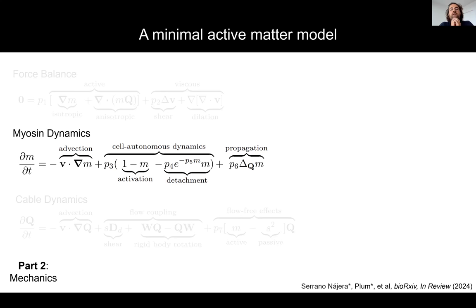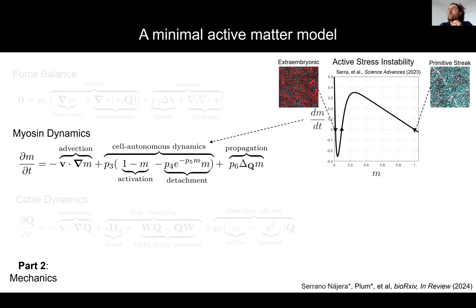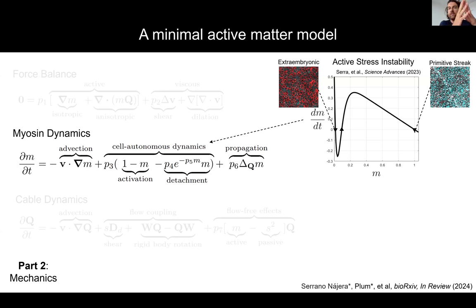An interesting property of this myosin equation is that it has instabilities. This PDE has a stable fixed point of high myosin — corresponding to the embryo proper or primitive streak — and another stable fixed point of very low myosin — corresponding to the extraembryonic region. There is also an intermediate unstable fixed point, which is where we believe the embryo operates throughout gastrulation, consistent with experimental observations showing a strong increase in myosin from HH1 to HH3.